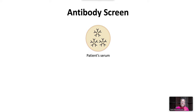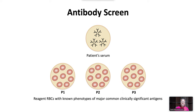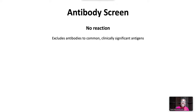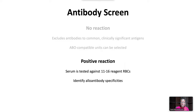The antibody screen tests the patient's serum against two to three reagent red blood cells with known phenotypes that have been characterized for all major common clinically significant antigens. If the antibody screen shows no reaction, it excludes antibodies to common clinically significant antigens and ABO-compatible units can be selected. If there is a positive reaction, then the patient's serum is tested against 11 to 16 known blood group O reagent red cells to identify alloantibody specificities and select antigen-negative units.